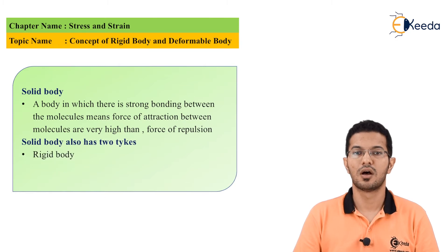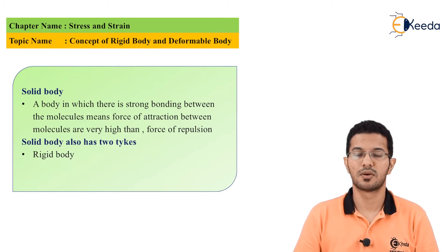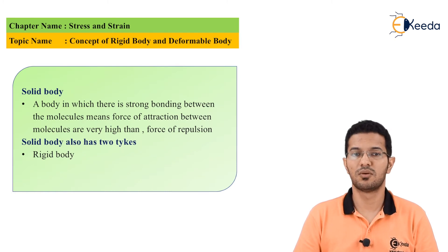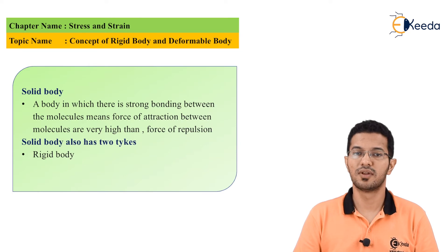A solid body also has two types: one is a rigid body and the other is a deformable body. Let's discuss both of them one by one.